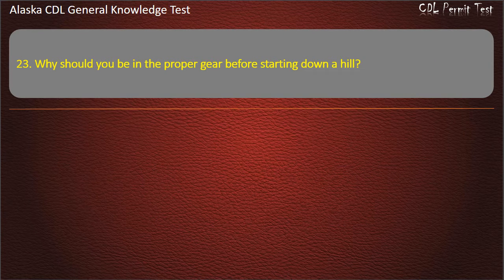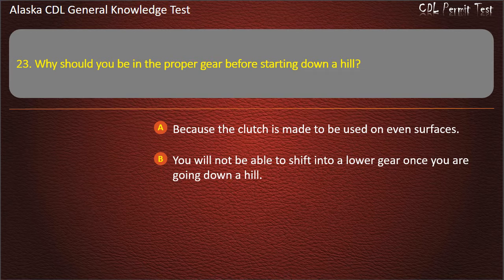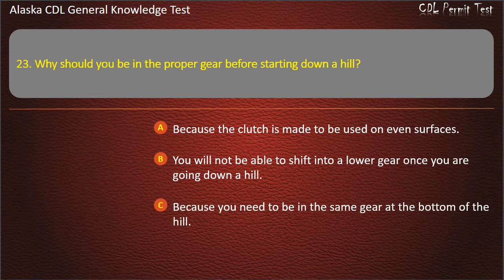Question 23. Why should you be in the proper gear before starting downhill? Because the clutch is made to be used on even surfaces; you will not be able to shift into a lower gear once you are going down a hill; or you need to be in the same gear at the bottom. Answer: You will not be able to shift into a lower gear once you are going down a hill.